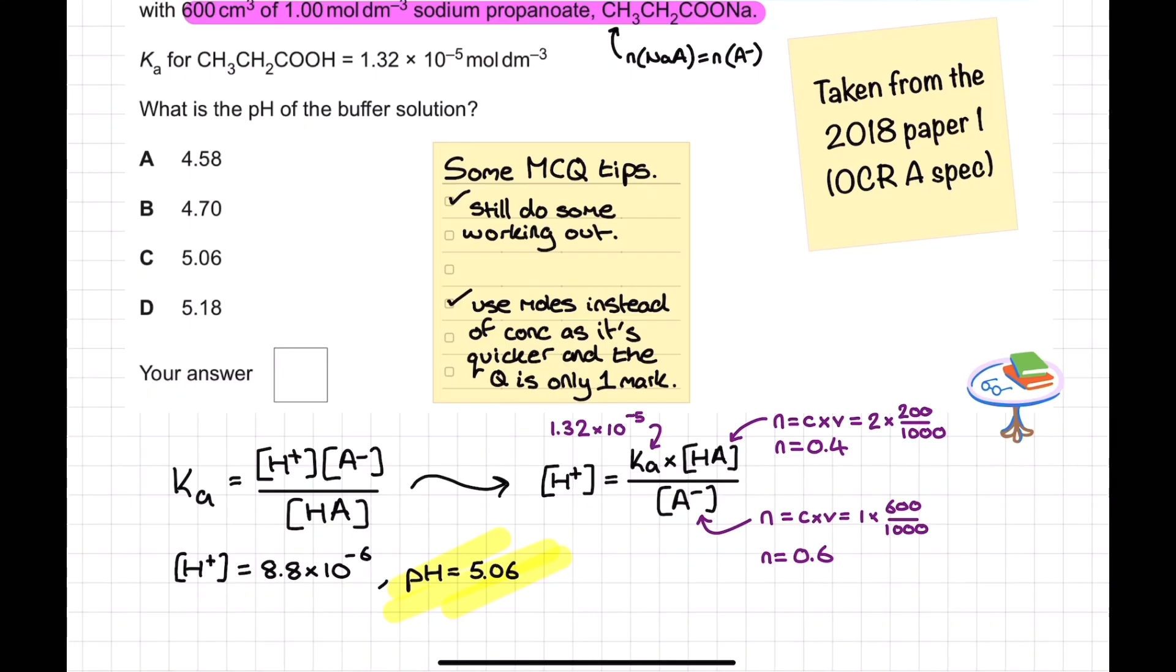And here, once again just like last time, I'm just going to put in the mole values of my HA, which would be my propanoic acid, and my A-, which remember is the number of moles of sodium propanoate, which is the same as the number of moles of propanoate ions. Once I chuck these numbers in, I get an H+ ion concentration of 8.8 times 10 to the power of -6, and my pH calculation of minus log gives me 5.06 as my pH value. That means the answer to this multiple choice question was going to be C.